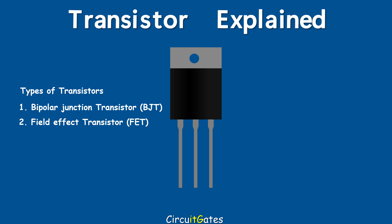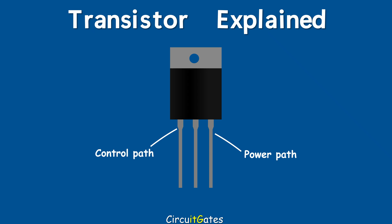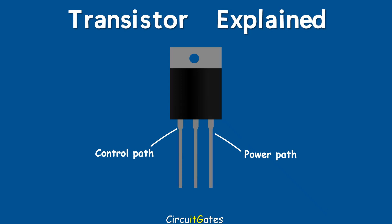A BJT transistor is a device with two paths for current to flow. We can refer to these as the control path and the power path. A small amount of current in the control path is used to activate a large current flow in the power path. When there is no current flow in the control path, there is also no current flow in the power path. This characteristic is why a transistor is used as a switch or to amplify signals.